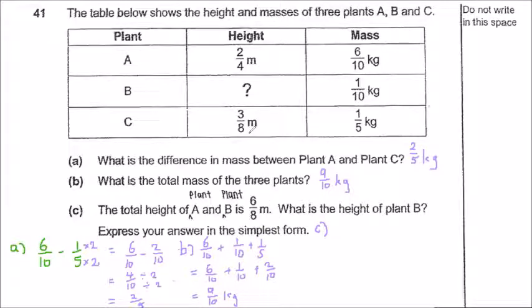So I will have just 6 over 8 minus away A, which is 2 over 4. So 6 over 8 minus 4 over 8. Remember to change it to the same denominator. How? 2 times 2. Then we will have 2 over 8, and 2 over 8 changed to the simplest form, I have 1 over 4. Okay, and that's the answer.